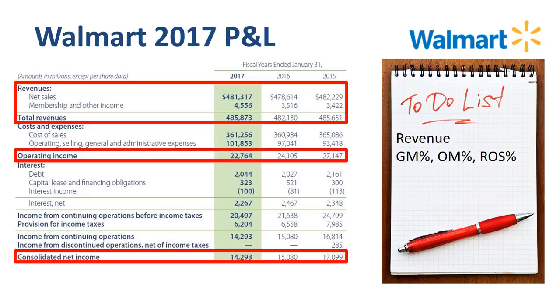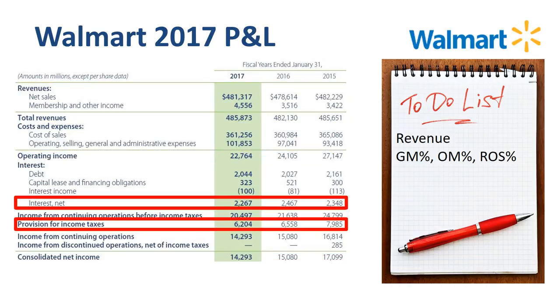As retail is traditionally a fairly low margin industry, every penny counts. Net income is almost 9 billion dollars lower than operating income, so let's review what is going on in the interest and tax lines.